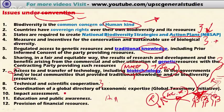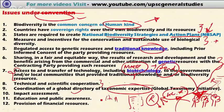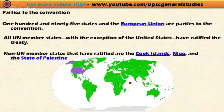Technical and scientific cooperation is also envisaged under this convention, along with coordination of a global directory of taxonomic expertise. Classification of plants and animals should be made for the betterment of humankind. Impact assessment, education and public awareness, and provision of financial resources from developed countries to developing countries for sustainable biodiversity management are all covered under this convention.